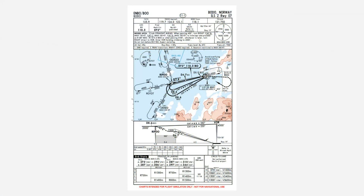Before we start an approach, we need to study the approach plate a little bit. This is the approach plate for the ILS Zulu Runway 07 in Bodo, Norway. Up top, we have the frequencies that would be used in real life to get the ATIS, the weather, the approach controller frequencies, tower and ground — we're not going to bother with that today. We're going to jump right in with the localizer frequency, which is 110.3.